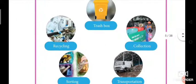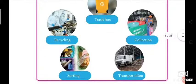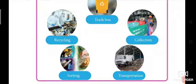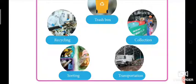Here we can see many pictures illustrating the process: trash bin as the first step, collection as the second, transportation as the third, sorting as the fourth, and recycling as the fifth step.